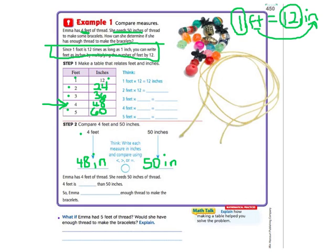So she has 48 inches. She needs 50. Since 48 is less than 50, so we write less in here, Emma does not have enough thread. She would need 2 more inches to get from 48 up to 50.